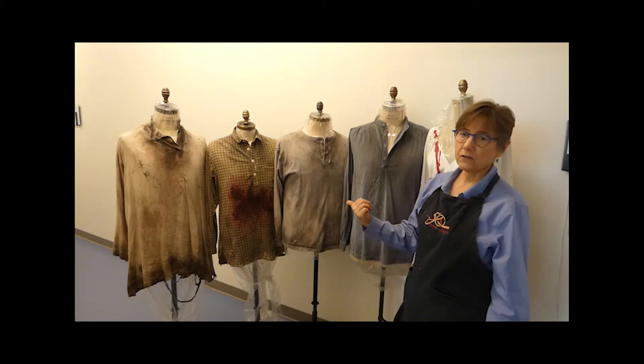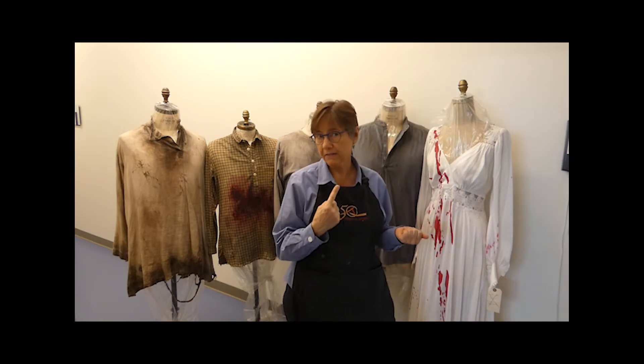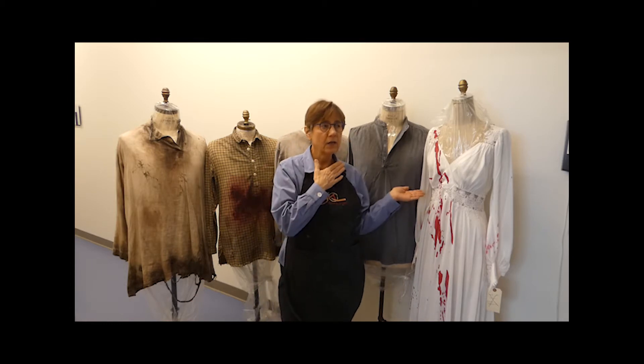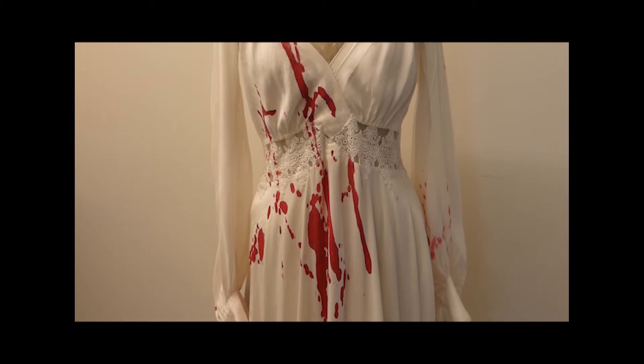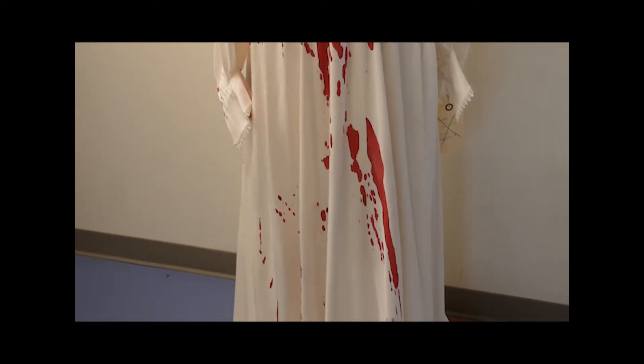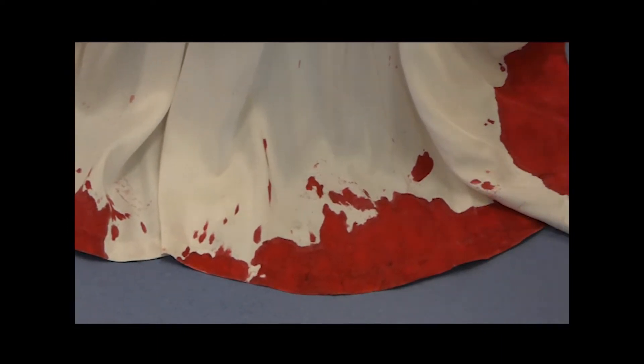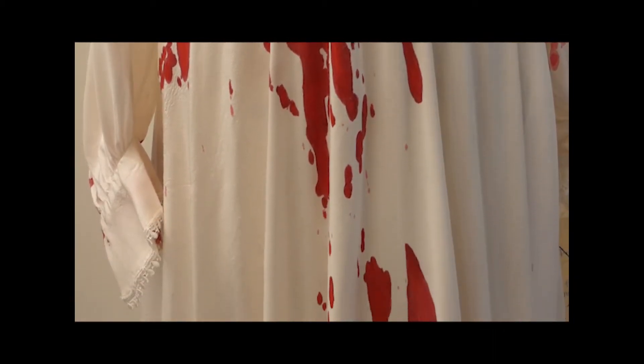There's also distressing that can suggest one single dramatic event. This is a costume for Lucia and in a fit of emotional distress she murders her brother. This began as a costume that was pristine. Nothing else untoward has happened to this character. And then suddenly this very violent event occurs. In this case we were tasked with creating the look of the blood splatter with specific areas that the designer had suggested she wanted blood placement to occur.